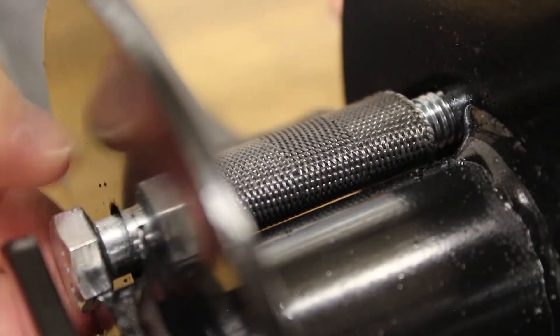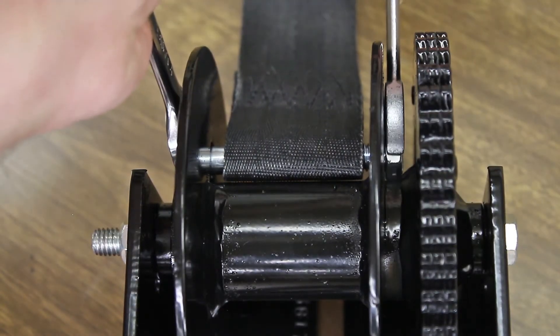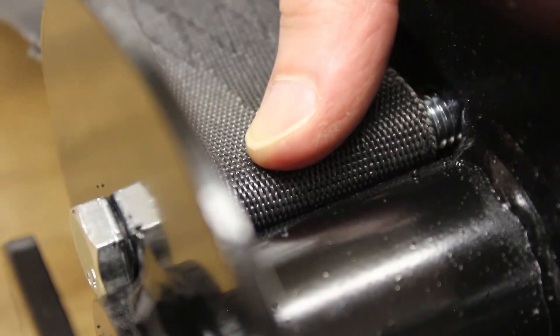start tightening the bolt with your fingers, then use a second 9/16-inch wrench to tighten the nut until it's just barely snug.